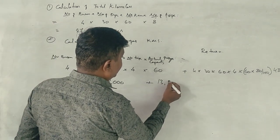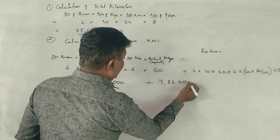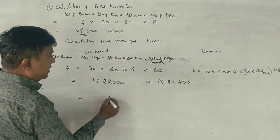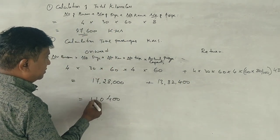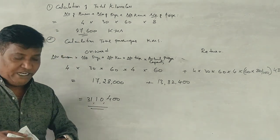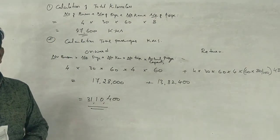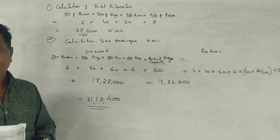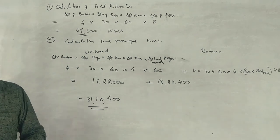13,84,000. This is the total. 31,10,400 passenger kilometers. That's the answer. Perfect.